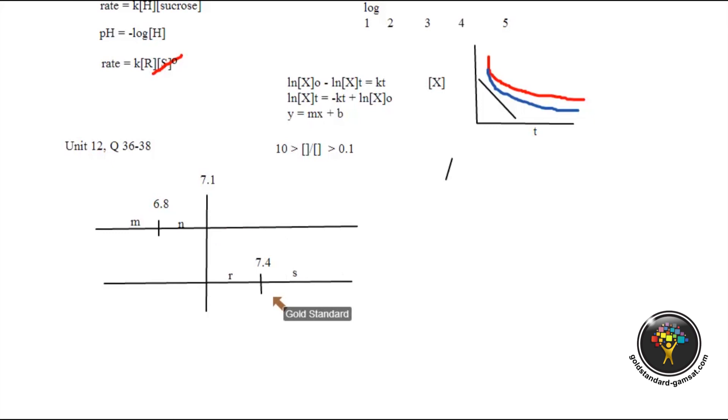n is dominant because at 7.1 it is already above 6.8. Look, if the pH we were given was 6.8, then you would get equal amounts of m and n. If the pH we were given was 3, we would have m dominating. But the pH we were given is above the pKa, so n dominates. That's for bromothymol blue. But 7.1 is below the pKa of 7.4, so r dominates for neutral red.